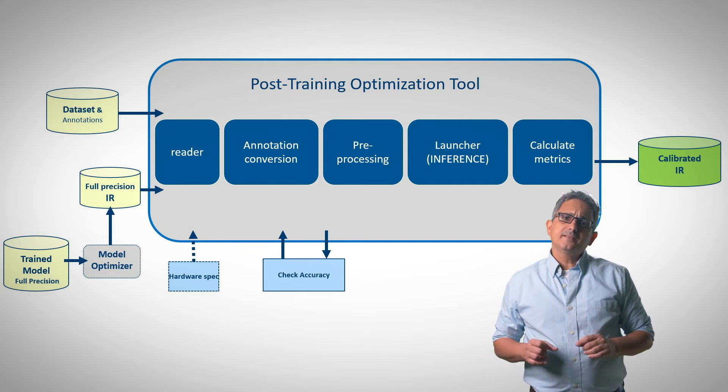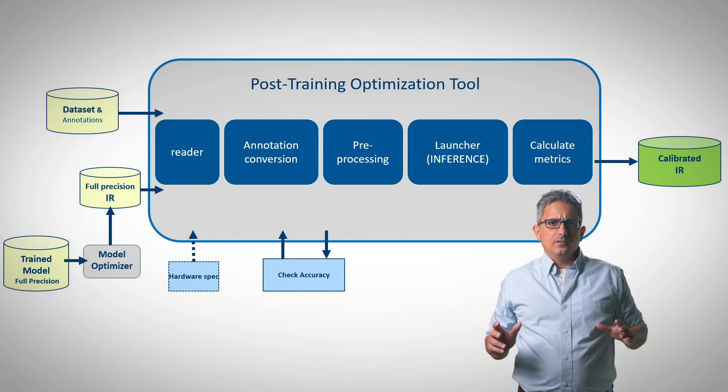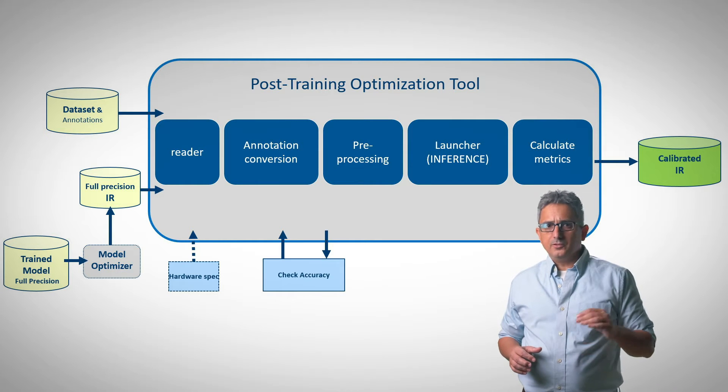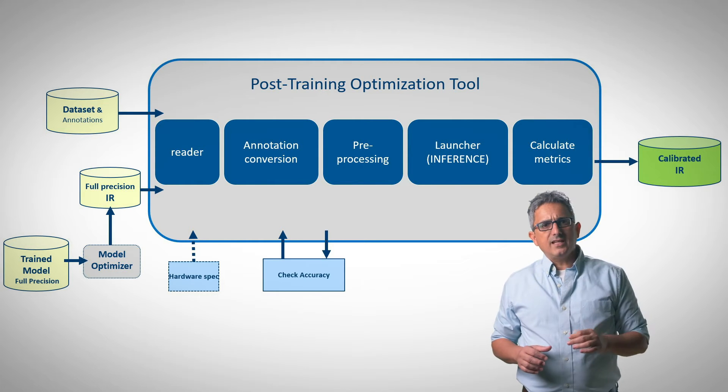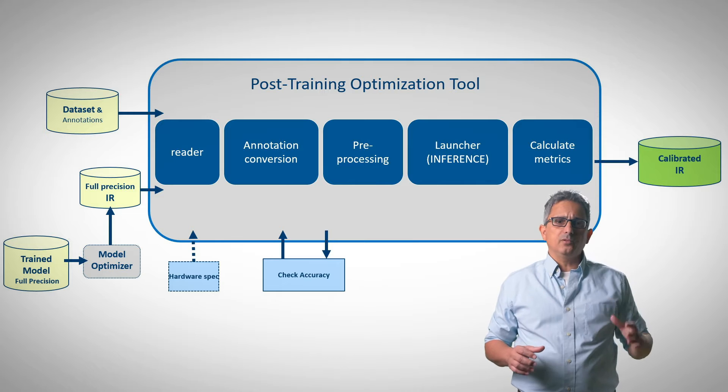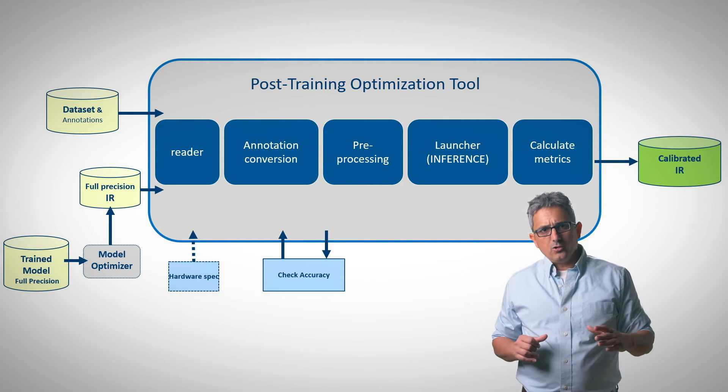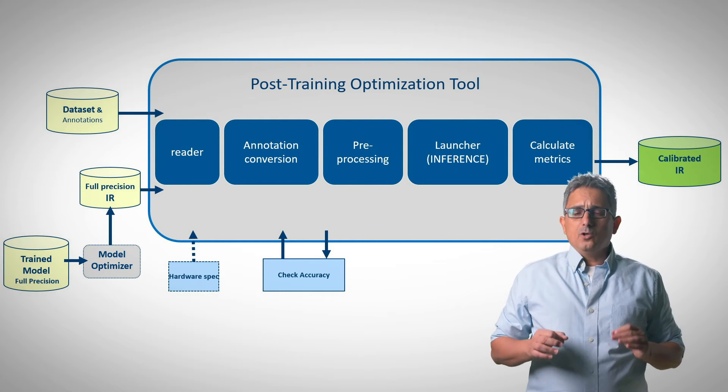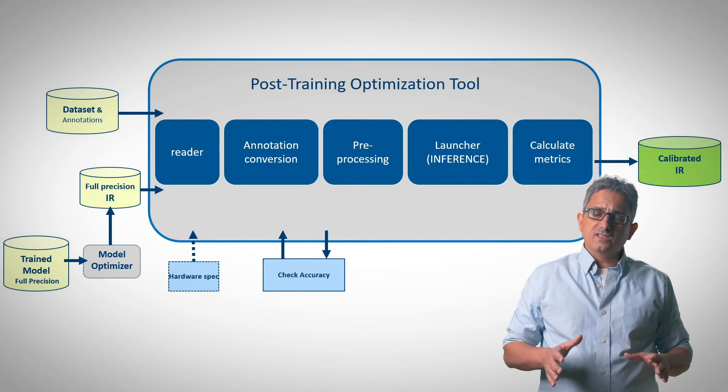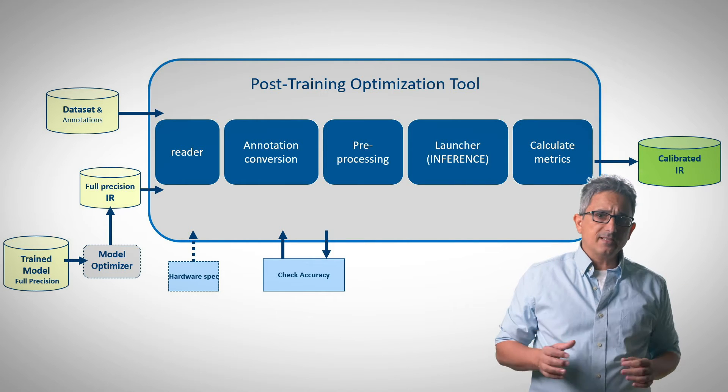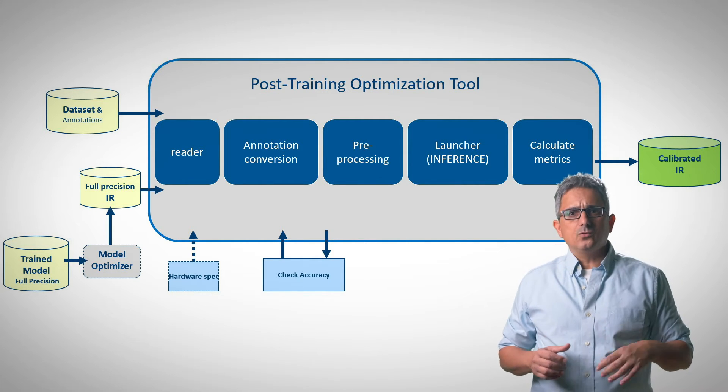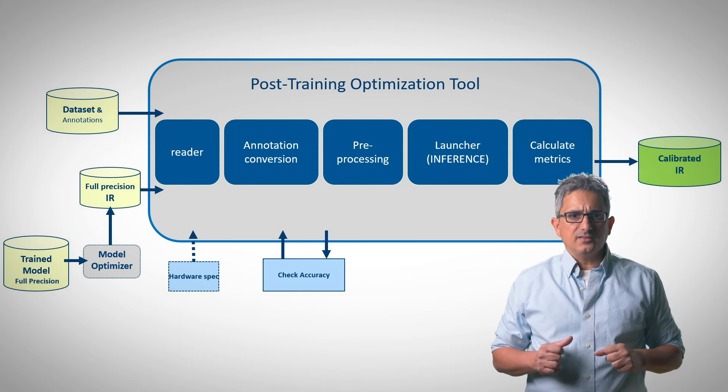The POT is implementing a full inference flow. It has a reader that reads the data, annotation can be converted per need, the pre-processing stage can perform all kinds of manipulations on the data, then a launcher is called basically inference engine. The inference could be done using OpenVINO, but also by the frameworks themselves, CAFE, MXNet, OpenCV, TensorFlow, etc. And the last stage is to calculate the metrics so we could check the accuracy.